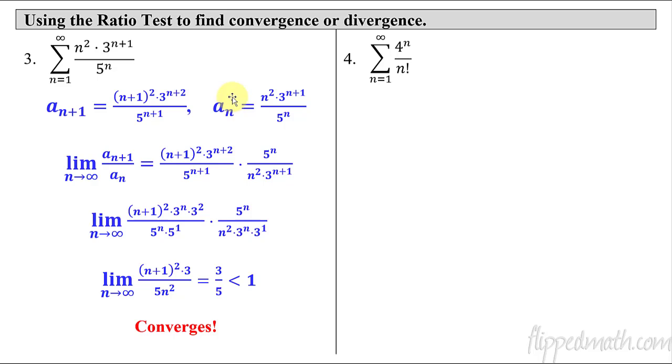So I know I'm doing this kind of quickly. Hopefully you can follow along, but you can always pause and write stuff down if you need to. So that was the ratio test for this thing. Since it was less than 1, it converges.